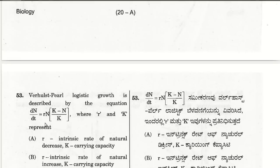The fifty-third question: the Verhulst-Pearl logistic growth is described by the equation dN/dt = rN(K − N)/K, where r is the intrinsic rate of natural increase and K is the carrying capacity. So B is the right answer explaining the definitions of r and K.